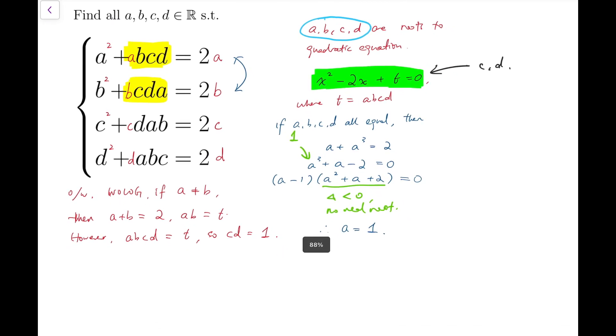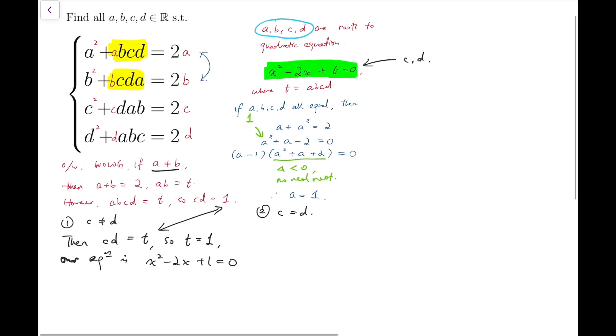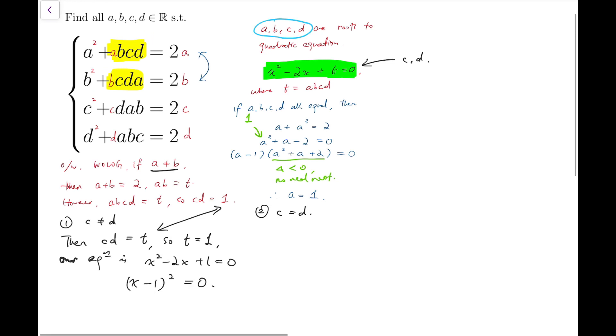So we further divide into cases. The first one is that c and d are not equal. And the second case is that c and d are equal. Now if c and d are not equal, then I can repeat from this stage of our argument. So I can say that the product of c and d is also equal to t. But we know that cd equals 1, so that means t equals 1. Our equation is actually x squared minus 2x plus 1 equals 0. But that's a very trivial equation. Because that means (x - 1)² equals 0, so x equals 1. And that's the same as our previous case, the case written in blue, which means all roots a, b, c, d are equal. We've obtained that already, so this does not contribute much.